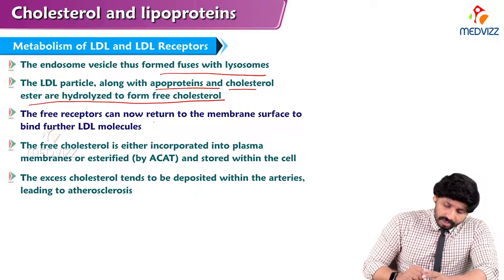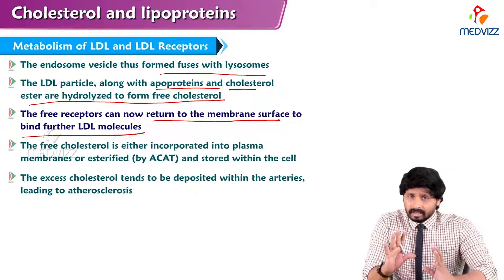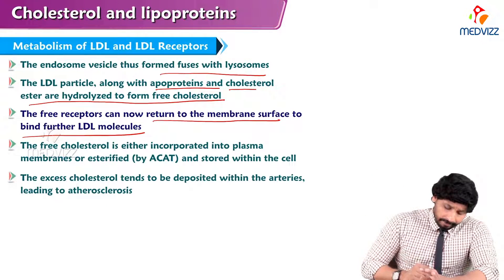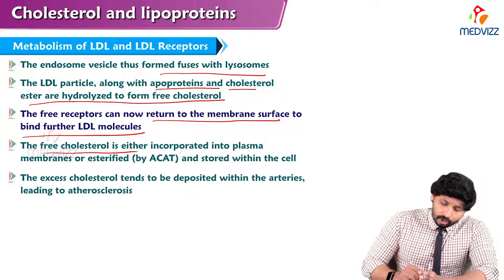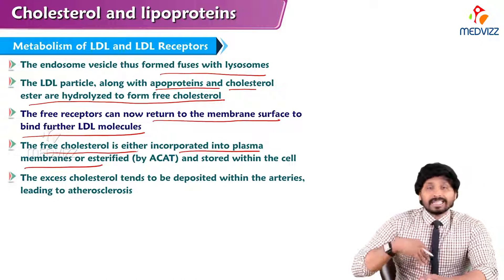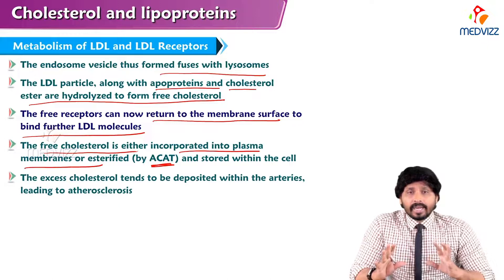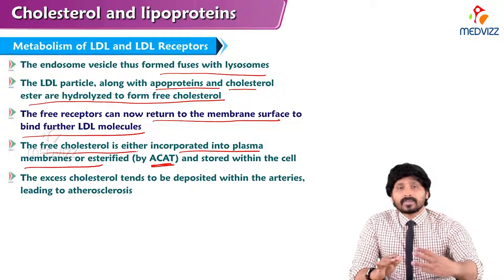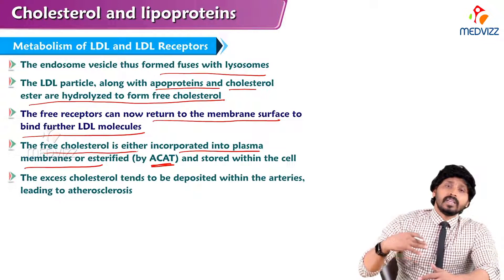The free receptors can now return to the membrane surface to bind further LDL molecules. Once dumping all the cholesterol ester content present in LDL, the receptor goes back to the surface of the cell membrane of the target tissue. The free cholesterol is either incorporated into the plasma membrane or esterified by ACAT — acyl-CoA acyltransferase — which re-esterifies the cholesterol.